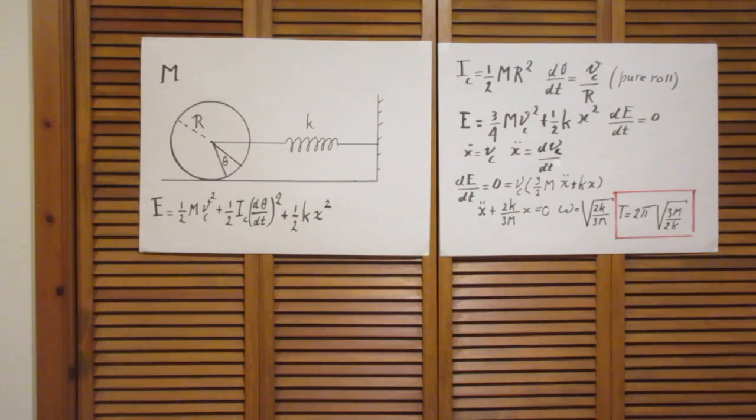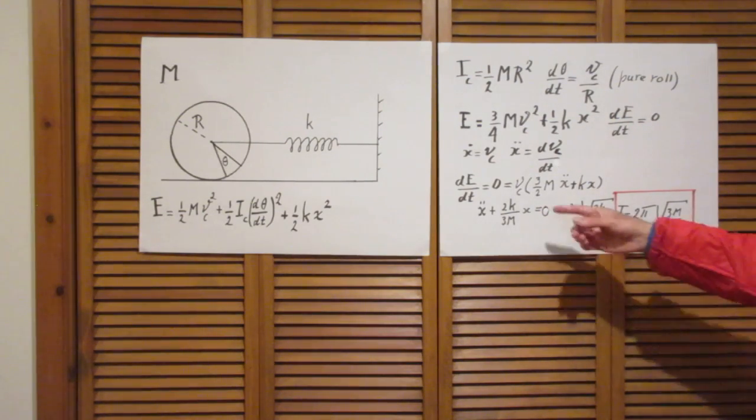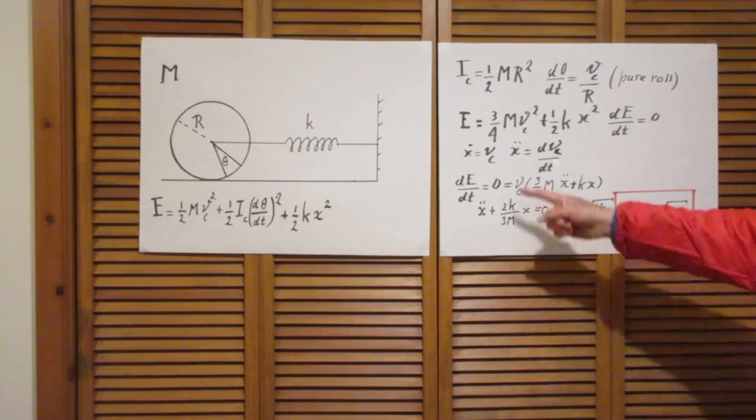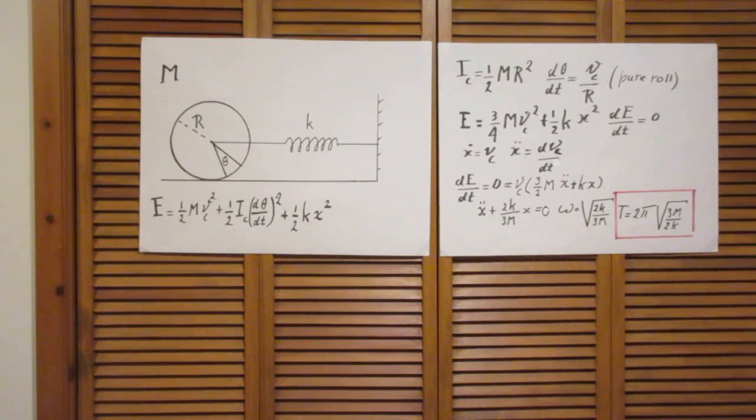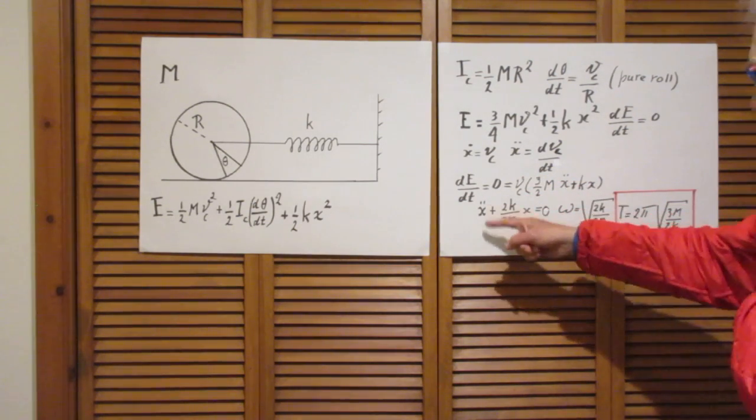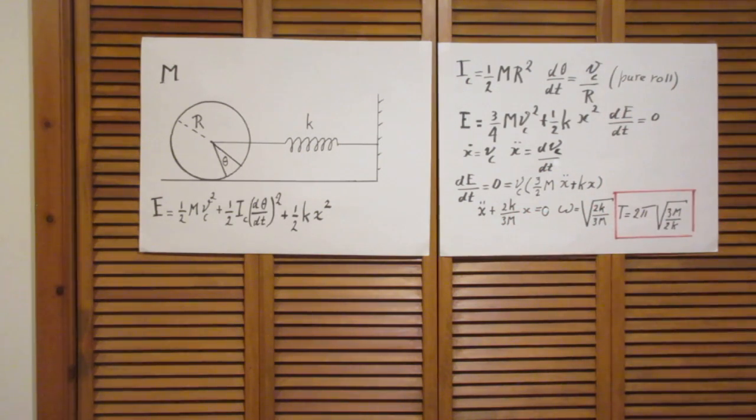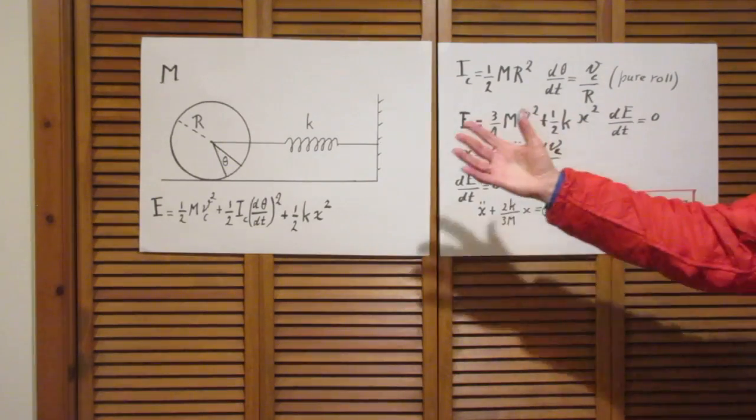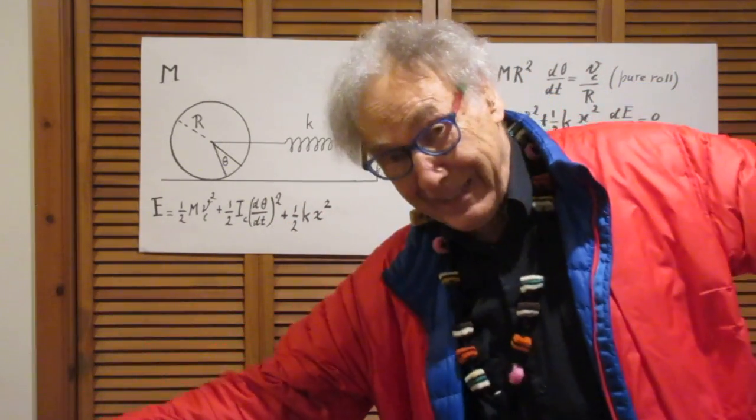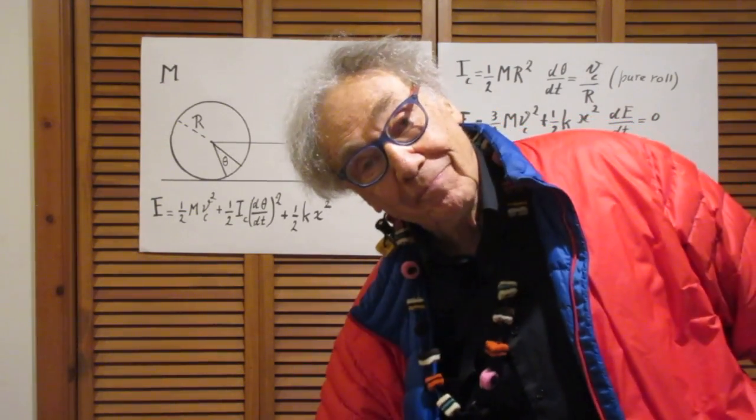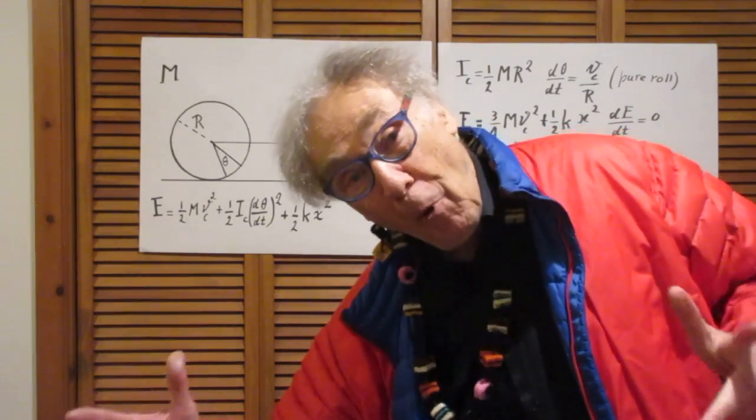Give it some thought. Take the derivative of this equation and confirm that you find this. You divide the vc out. And now you get x double dot plus 2k over 3m times x is zero. And we are in business! That is a classic differential equation for which the solution is a simple harmonic motion.